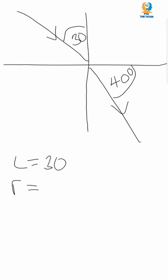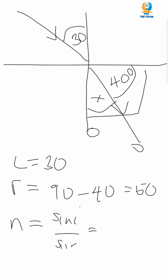So to find the angle of refraction we will say it's 90, because this angle is 90 minus 40, that will give us 50. Then we can proceed and say the refractive index is equal to sine i over sine r, sine 30 over sine 50.